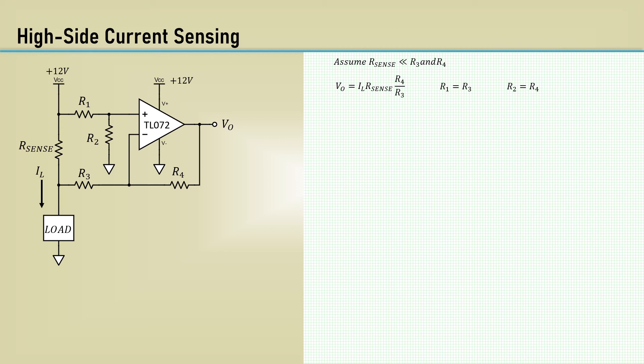We select the sense resistor based on the maximum allowable drop we can allow between VCC and the load and the maximum load current. Let's assume a 50 millivolt drop and a max current of 1 amp, which yields 50 milliohms. In order to utilize the maximum output range, we can calculate gain based on the max output span over the current range times the sense resistor, which comes out to 96.3.